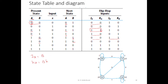And this is the transition diagram. We have four states: 00, 01, 10, and 11. From state 00, when input X=0 we go to state 01, and when X=1 we remain in the same state — it is a self-loop. The same information from the state table is represented as a diagram here. This completes the analysis of the sequential circuit implemented with JK flip-flops.